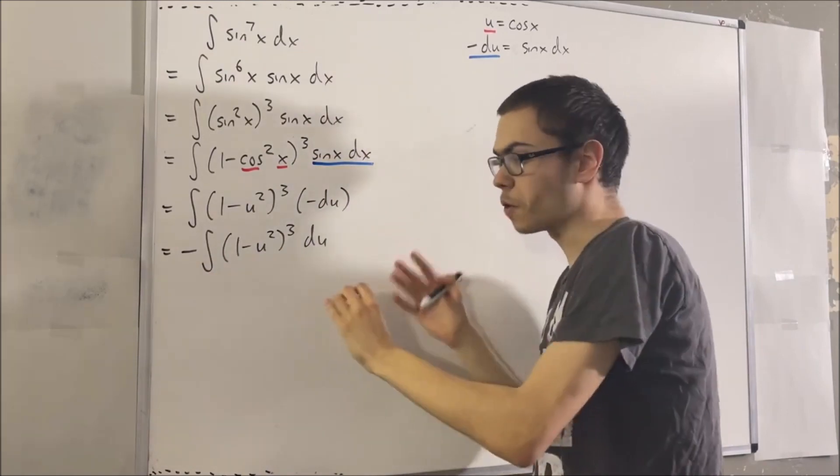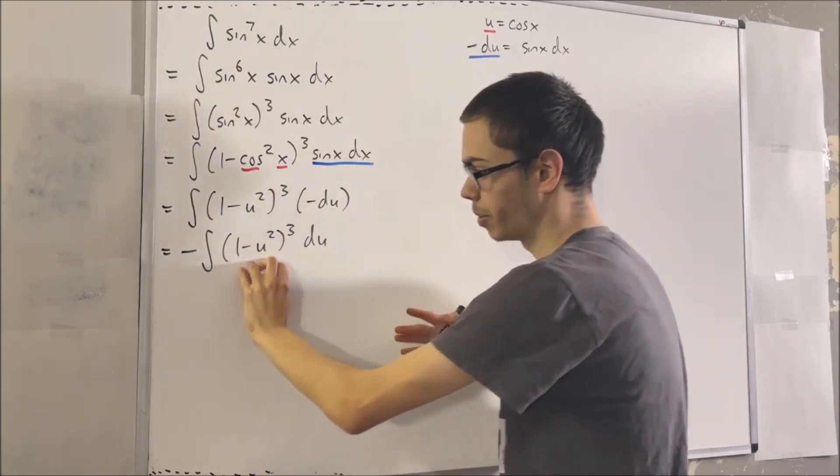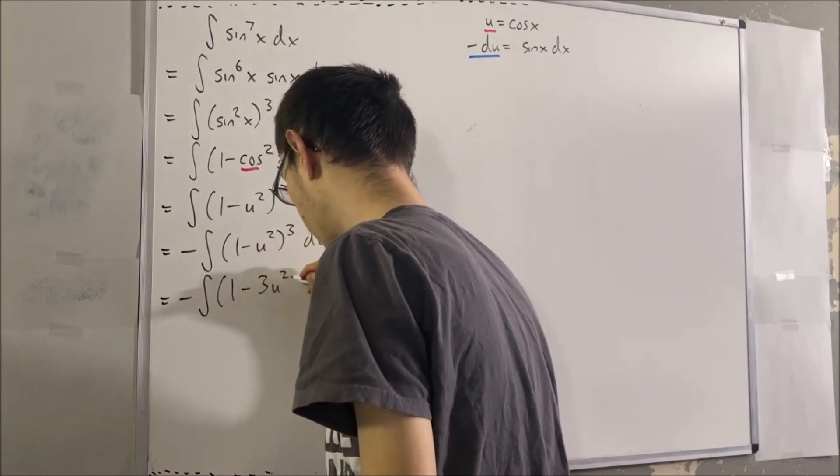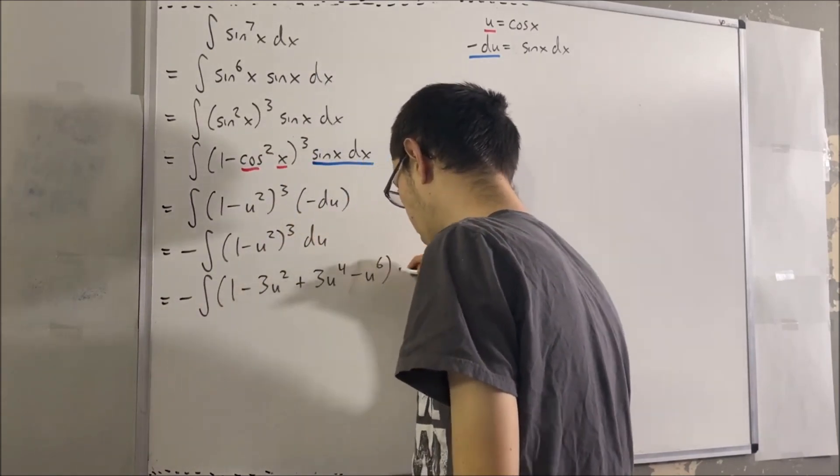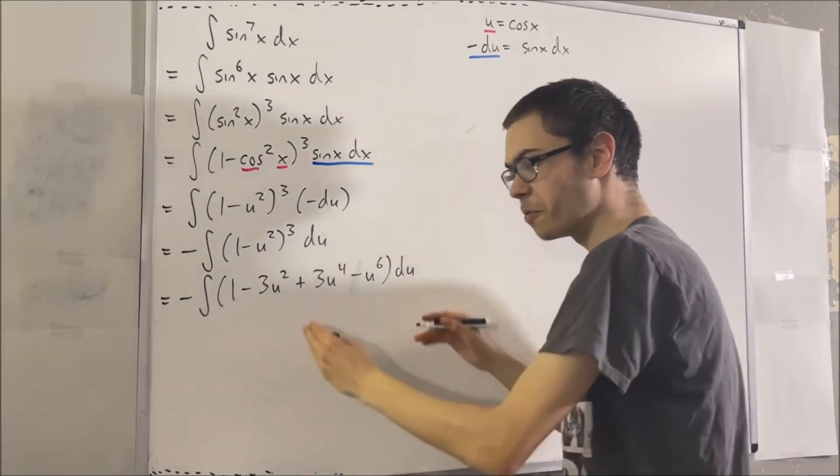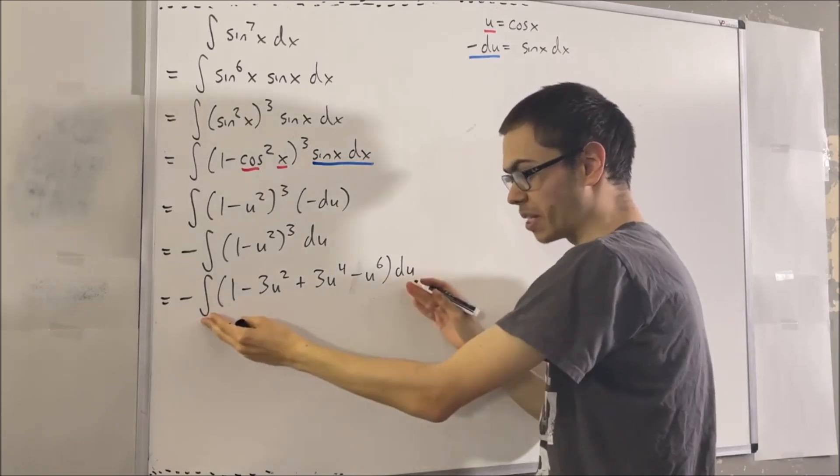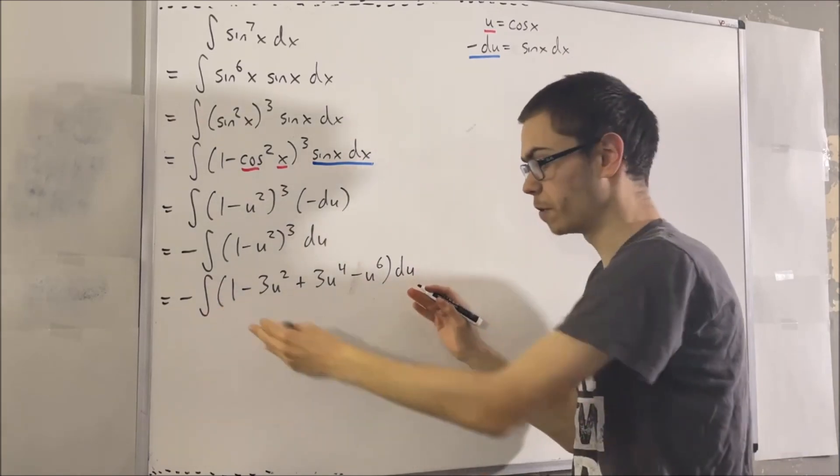Well, what we can do first is we can just expand this out. We would get this. And now, all we have to do to evaluate this integral is use the reverse power rule. And if we do that, we will get this.